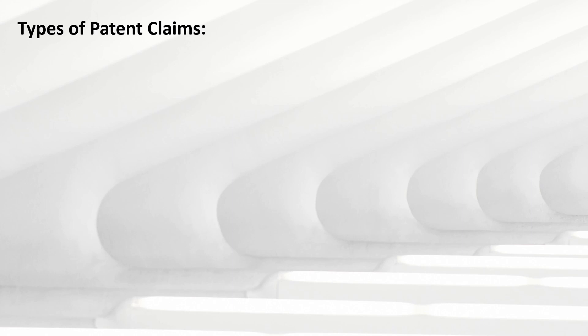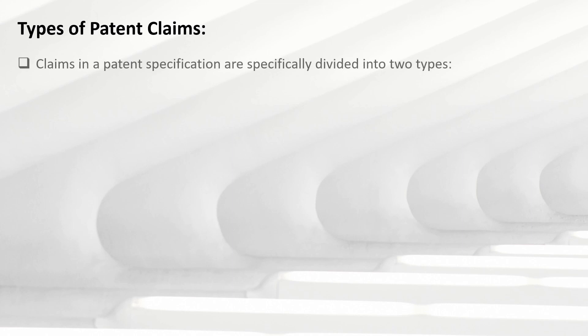Now let's look at types of patent claims. There are different types of patent claims, but when we talk about patent claims in a patent specification, they are specifically divided into two types: one is the independent claim and the second is the dependent claim.